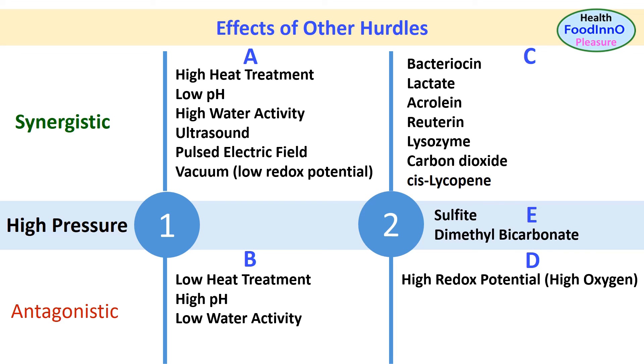In addition, high pressure transforms cis-lycopene in tomato, thus it could increase the absorption of health functional lycopene.